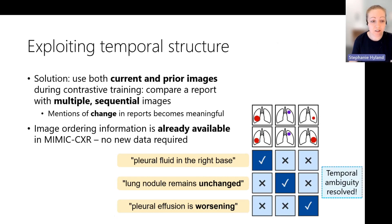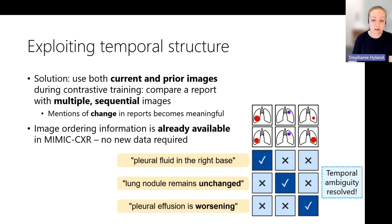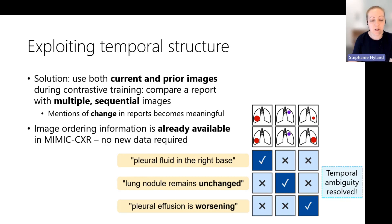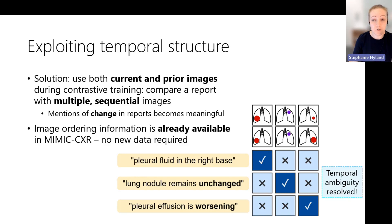The solution is to use both current and prior images during contrastive training. We're able to compare a report with multiple sequential images from the same patient. Mentions of change like 'pleural effusion is worsening' can then be grounded in the images because we have access to two or more images. Importantly, this image ordering information is already available in datasets like MIMIC-CXR — we're not using any new data, just exploiting the existing structure.